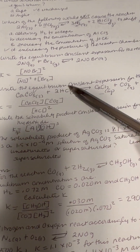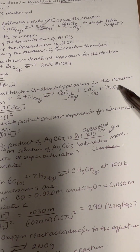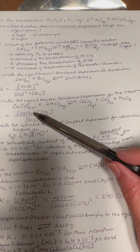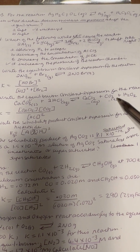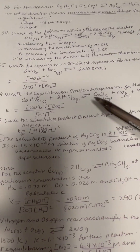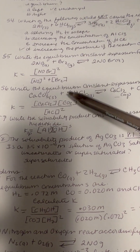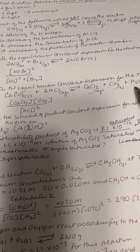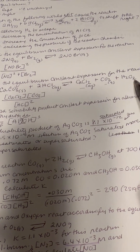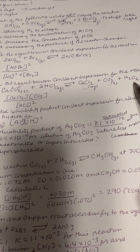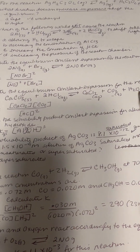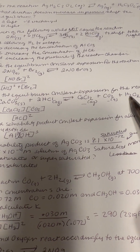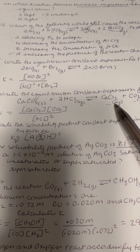Number 56: write the equilibrium constant expression for the reaction. Here is our equation. We're going to do the same thing as in 55. Now, if they're liquids or solids, we're going to leave them out of the equation. Here we have H₂O as a liquid, so we're not going to count it, but we're going to count gases and aqueous species.